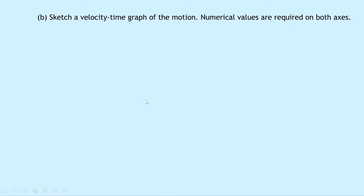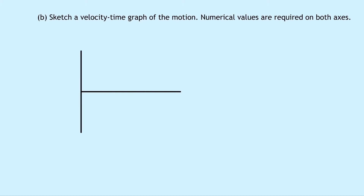Part B says to sketch a velocity time graph of the motion this time. Numerical values are required on both axes. In part A we drew a speed time graph, whereas now we're asked for a velocity time graph. Remember the difference between a velocity time graph and a speed time graph is that velocity time graphs can show negative values, because we can go below the x-axis and show motion going in the opposite direction.